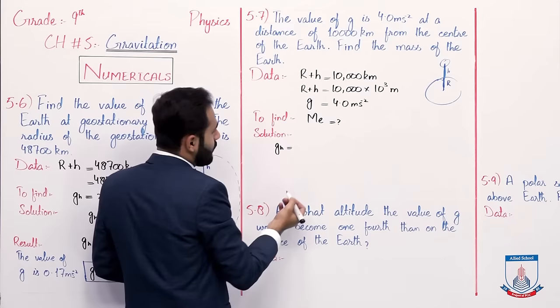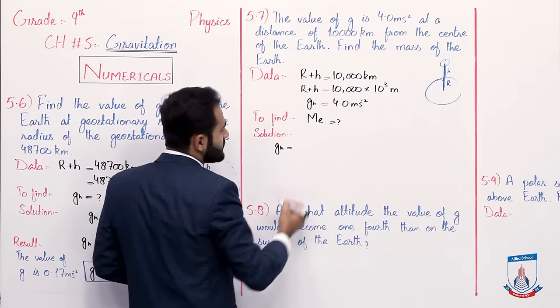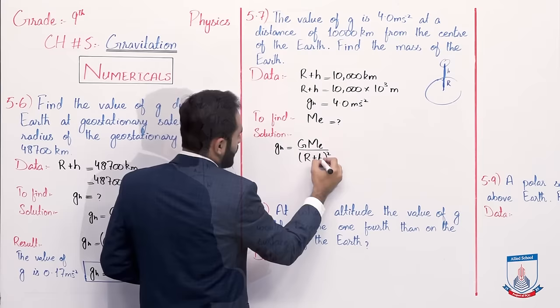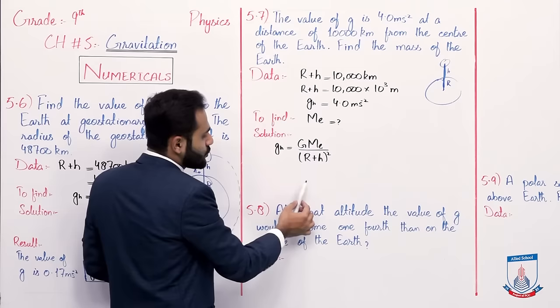Write the solution. Using the same formula, gravity at specific height g_h is 4.0 meter per second squared. g_h equals G times mass of Earth over (r plus h) whole squared. Because we have to find mass of Earth, we rearrange: move (r plus h) whole squared to the other side by multiplying.